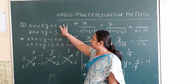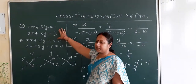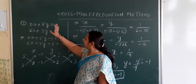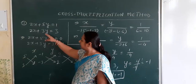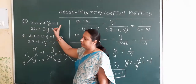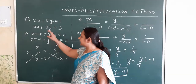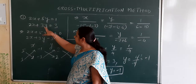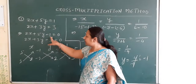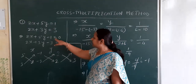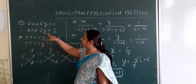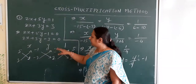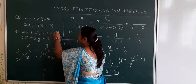Let's see the example we solve by cross multiplication method. The first step is to make the right hand side 0. We take terms from the right hand side to the left hand side. So 2x plus 5y minus 1 equals 0, and the second equation: 2x plus 3y minus 3 equals 0. Now the right hand side becomes 0.